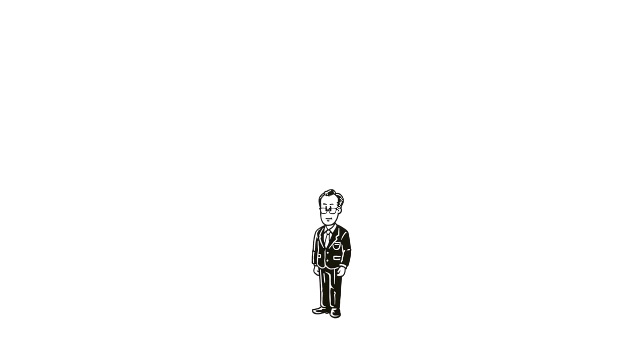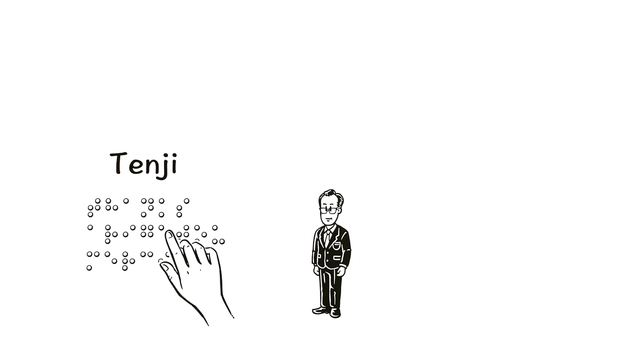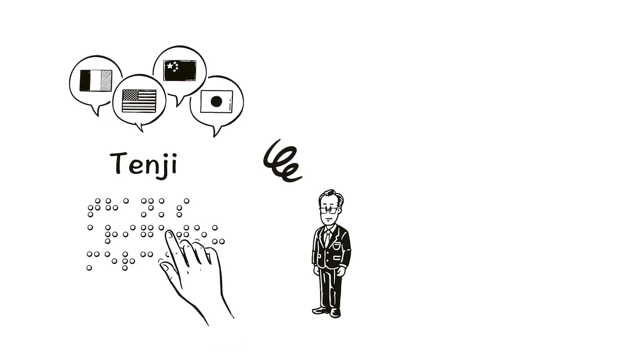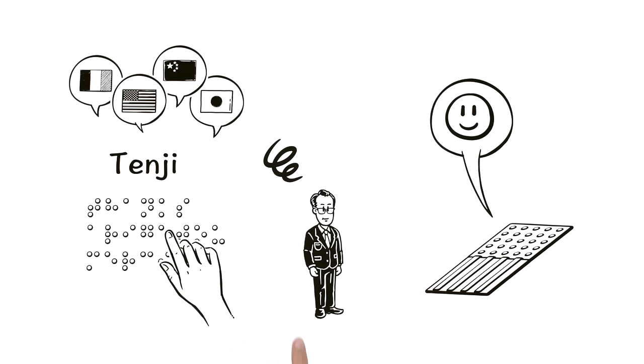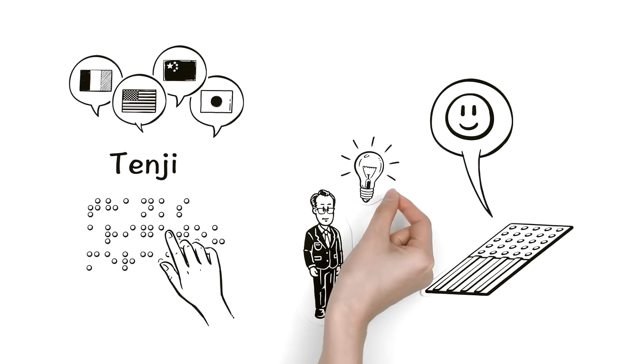Miyake was inspired by braille, which is called tenji in Japanese. But braille is difficult to learn, and each language has its own version. Miyake's tiles, on the other hand, are a universal design that anyone can quickly understand.